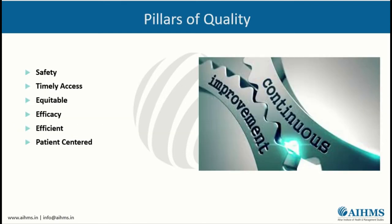Next we will discuss the pillars of quality. There are six pillars: safety — we need to provide service by following safety rules; timely access — we need to do the right thing at the right time; it should be equitable; it should have efficacy; it should be efficient; and it should be patient-centered. Patients are the consumers, so we need to keep the main focus on patients.